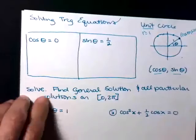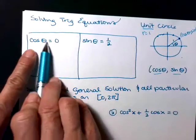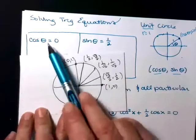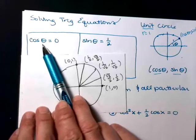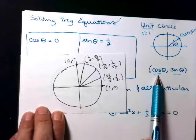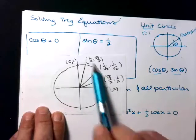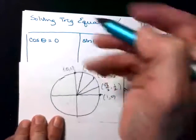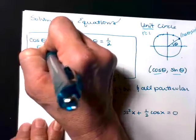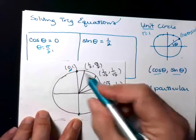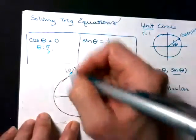Let's go ahead and solve some trig equations. Cosine of theta equals zero — our goal is to figure out what theta is. I've recopied my unit circle. Where is cosine equal to zero? Cosine relates to the x values, so where on my unit circle are the x values zero? That's going to be here at the top and bottom. It's when theta equals pi halves, where cosine is zero, and again down at the bottom — three pi halves.